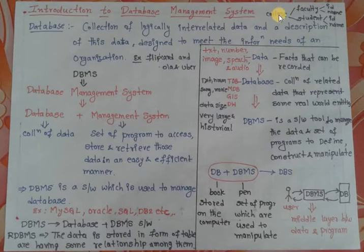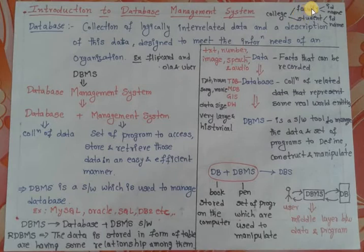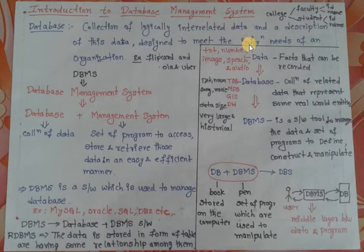Taking the example of a college: a college is an organization that has a relationship with faculty and students. Faculty have their own data — an ID and name — and students also have their own data — an ID and name. Here, data refers to raw facts that can be recorded, and information is processed, meaningful data.